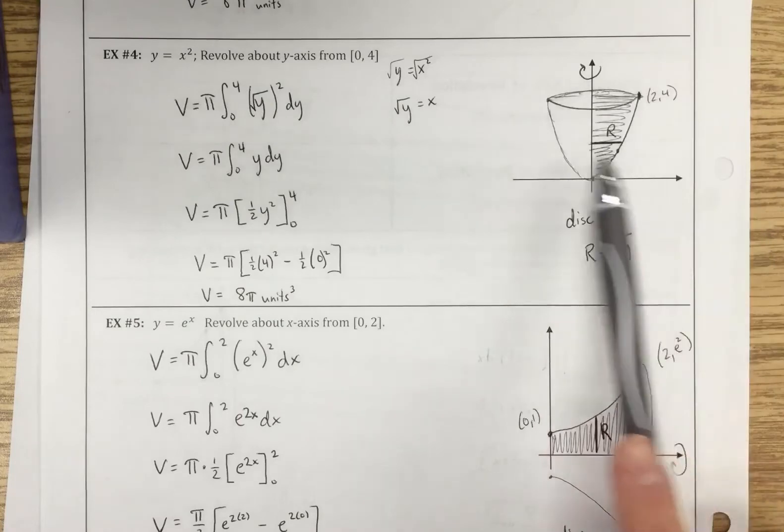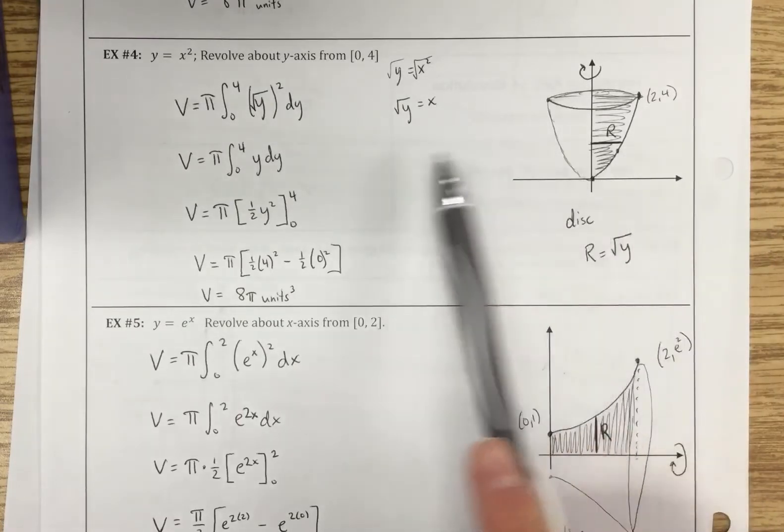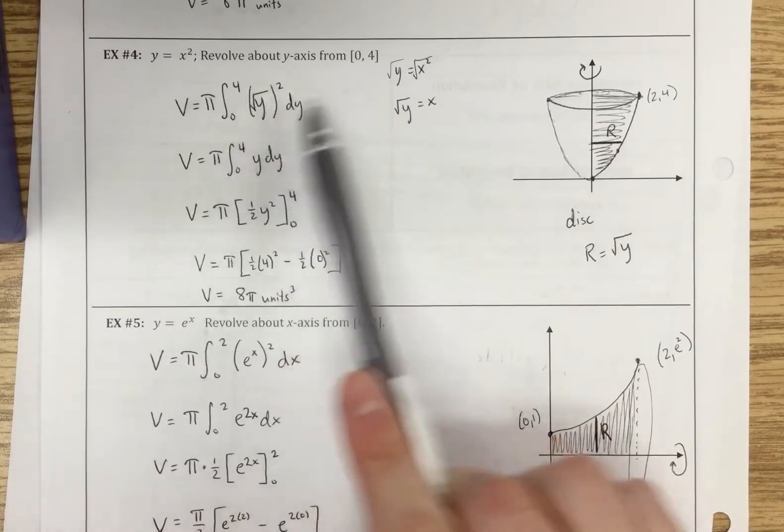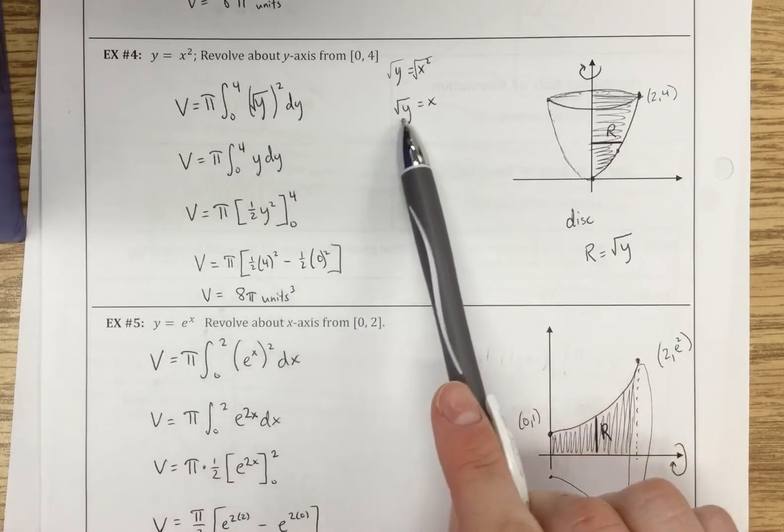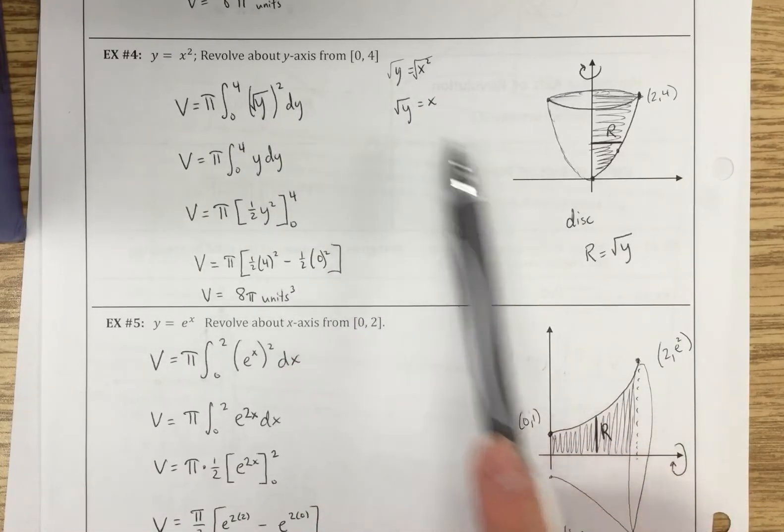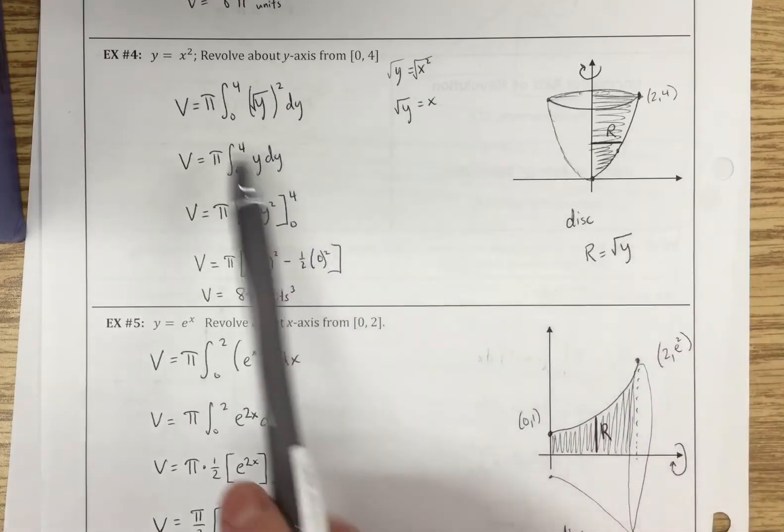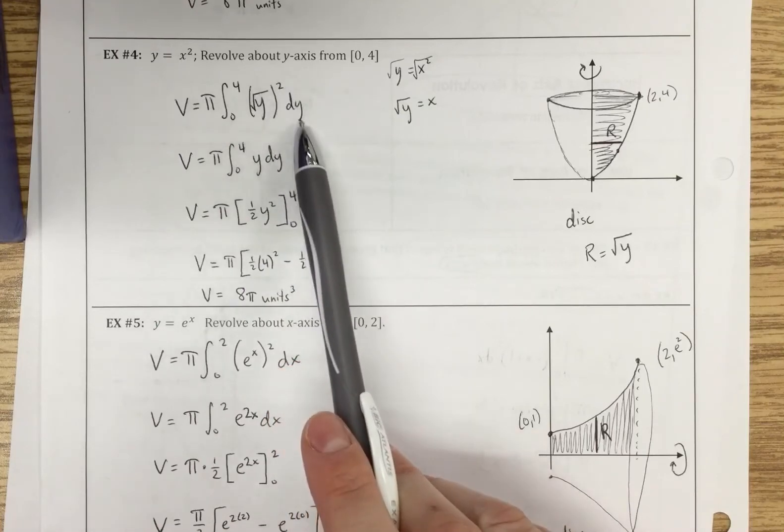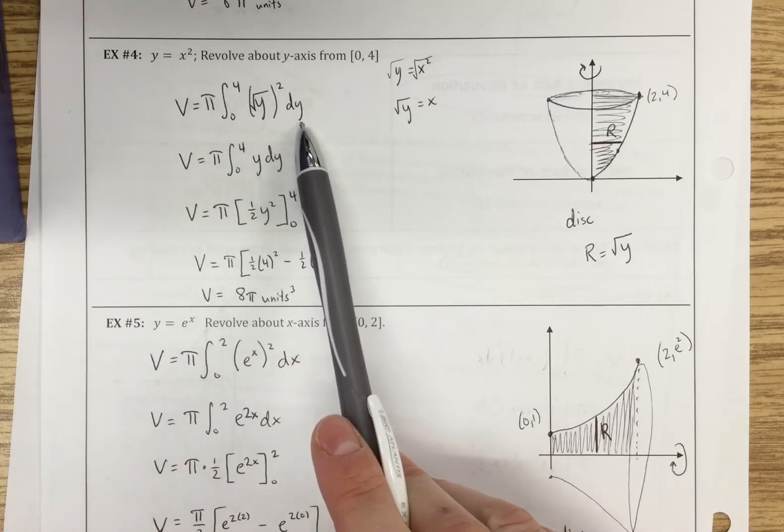Since we are doing this perpendicular to the y-axis, that's why we have to have this in terms of y or with respect to y. So I have to first solve my equation so it's in terms of y. And then my radius is now the square root of y, so then we have pi r squared times the height, which is dy in this case.